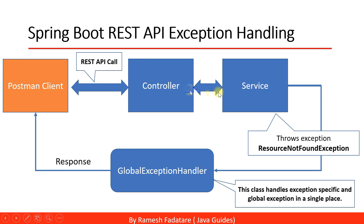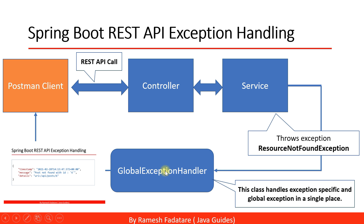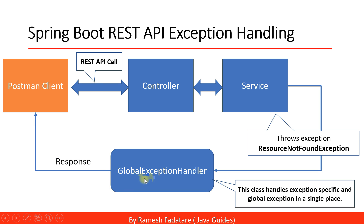Now let's look at how to customize a REST API error response. We are going to create a global exception handler class where we will write all the code to handle specific exceptions and global exceptions in a single place — instead of handling exceptions in each controller separately. When the client sends a request, the service validates the parameters, and if a parameter is not valid it throws an exception, which we handle manually in the global exception handler, customizing the error response before sending it back to the client.